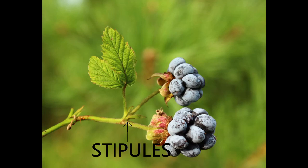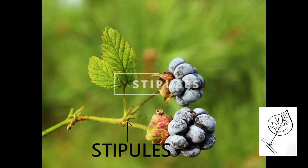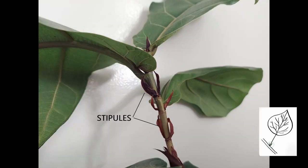At the base of a leaf, you might sometimes find stipules — a couple of small projections that vary in their appearance. For example, they might look like glands, scales, or spines.